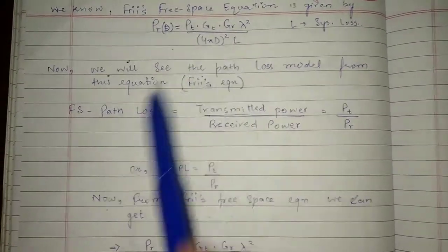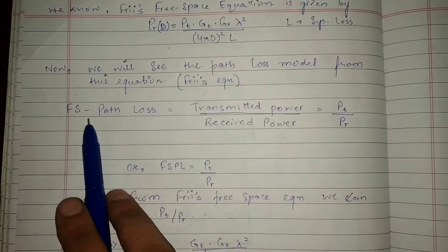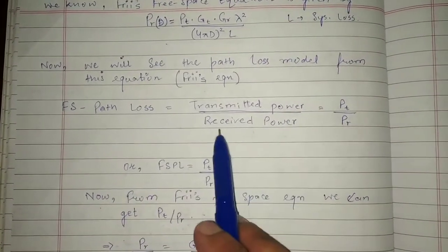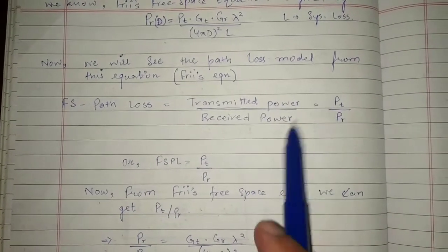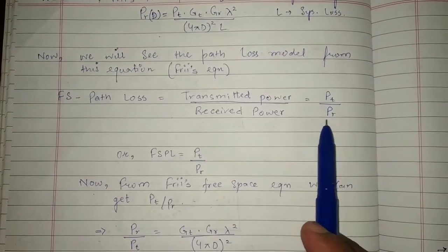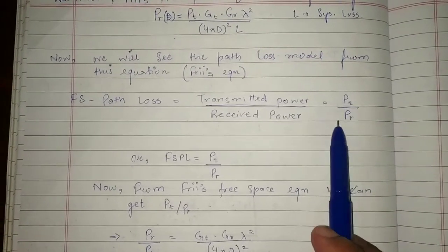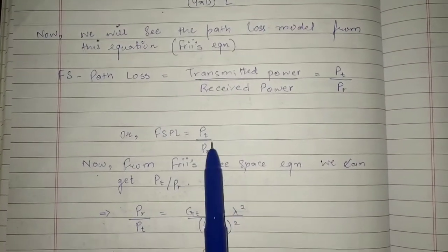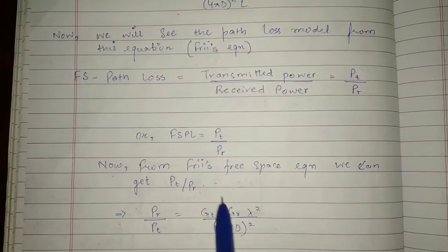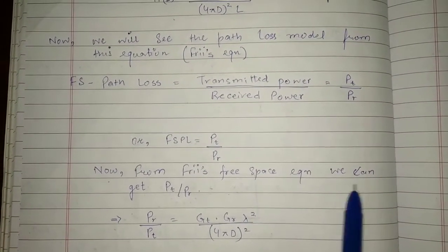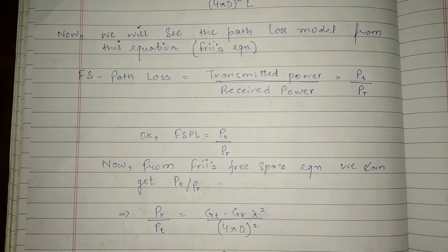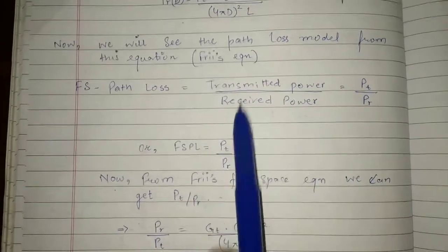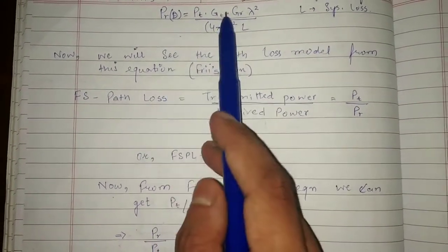From the Friis equation we will derive the path loss model. We know that the free space path loss is equal to transmitted power divided by received power, which is also written as PT/PR — that is, transmitted power by received power. So free space path loss equals PT/PR. From the Friis free space equation we can obtain PT/PR, since PR/PT from that equation equals the following term.